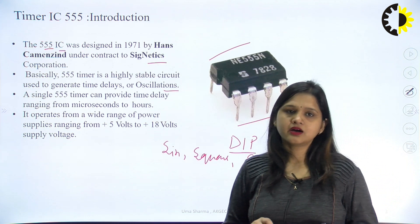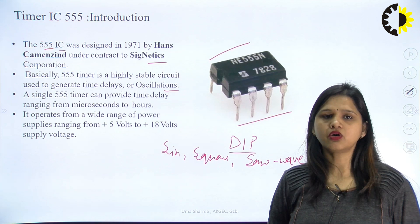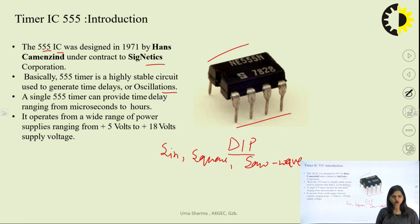Integrated circuit means a combination of a large number of components on a single chip. There is a lot of circuitry involved in any IC, and for the operation of any IC, we require different waveforms and different signals. Waveform generators are therefore very useful in the field of electronics.